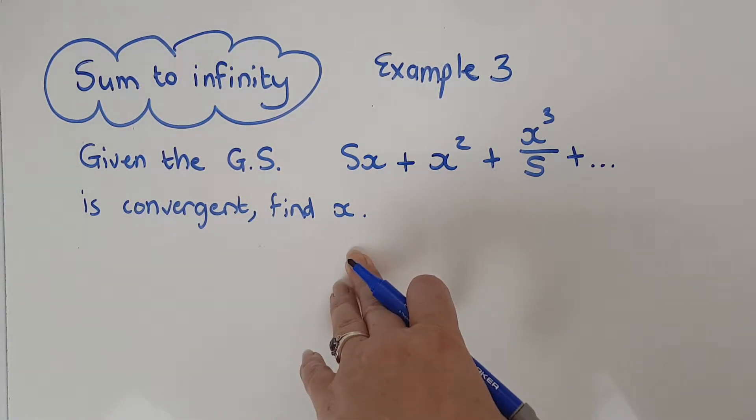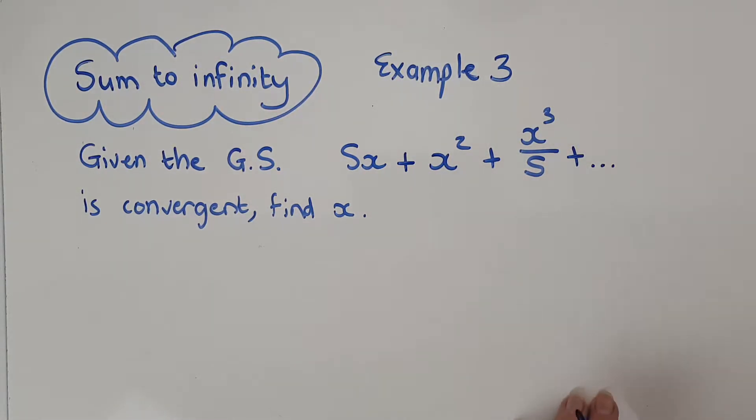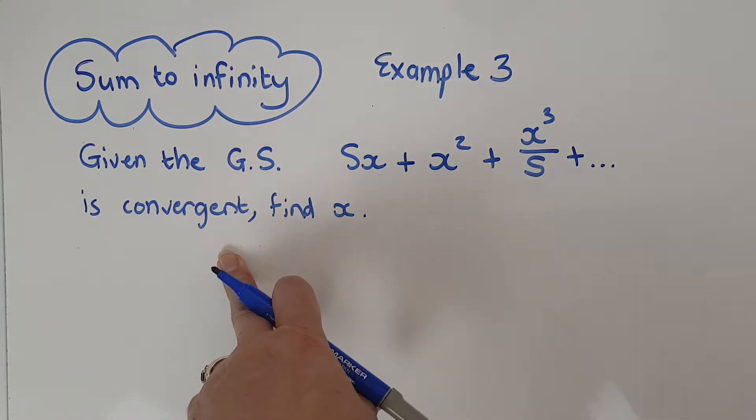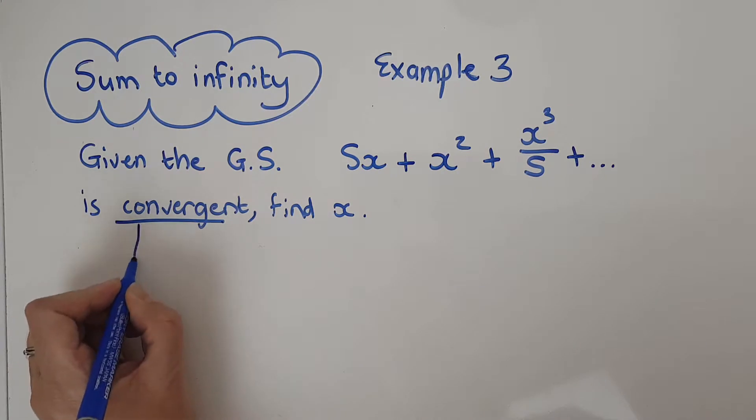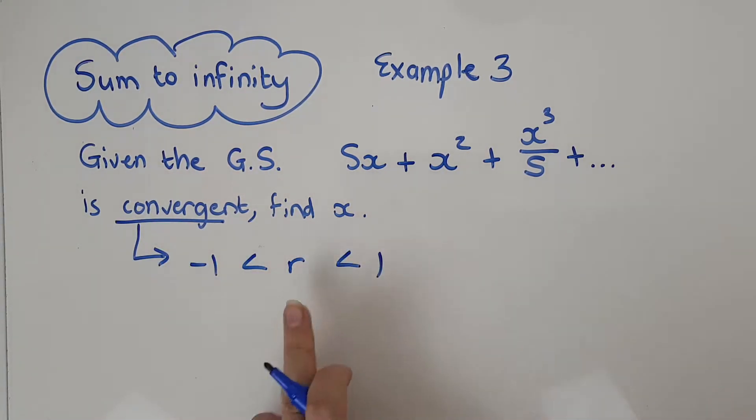Now if we know it's a geometric series, we know the ratios are the same. But it's convergent, so we know that the ratio, whatever it is, is between negative one and one. So I'm going to set that up straight away. I'm going to say convergent gives me negative one less than r less than one.